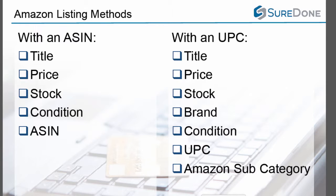You can also list with a Universal Product Code or UPC, which — in addition to a title, price, stock, and condition — is going to require a brand, that UPC, and an Amazon subcategory.